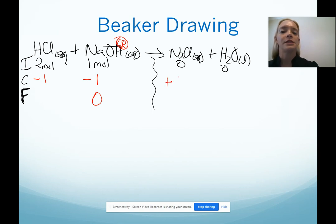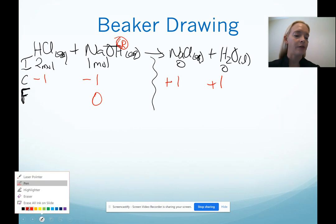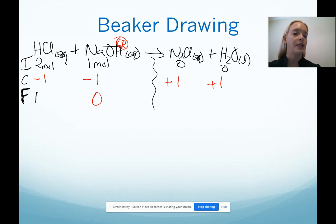So remember reactants decrease, products increase, and then that allows me to figure out how much I have left in solution. So I have one mole of HCl, one mole of NaCl, and one mole of H2O.